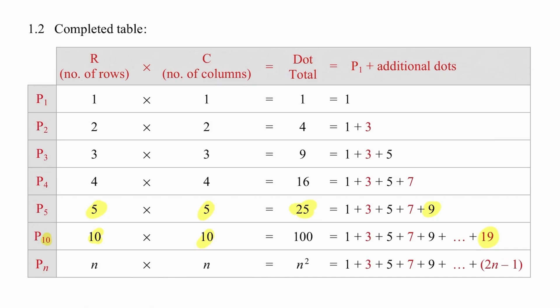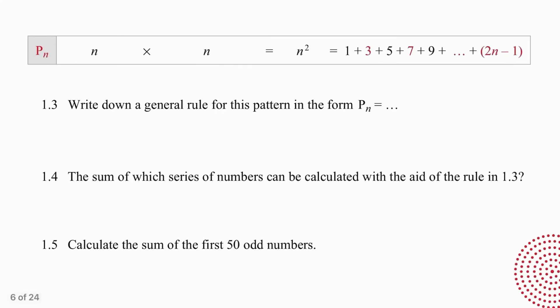If we want to generate the pattern for n terms, we've got n by n, which is trivial, n squared. The last number in that pattern is going to be twice n minus one. Pause the video. See if you can answer these questions and then we'll go through them together.